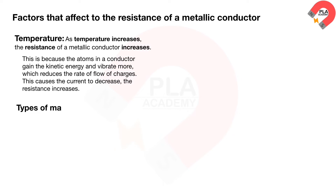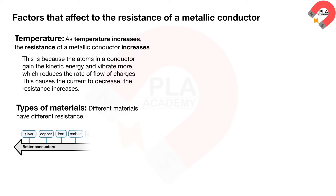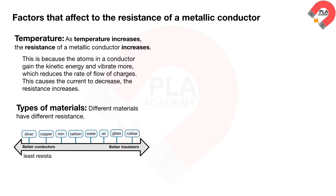Types of materials: different materials have different resistance. For example, silver is the best conductor, so it has the least resistance. The resistance of a material increases as shown in the diagram below.